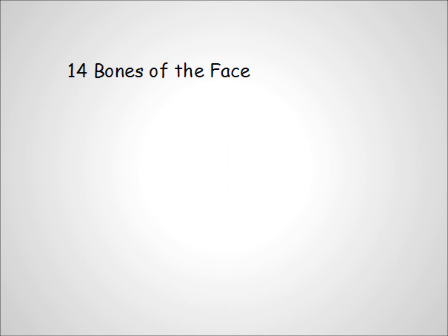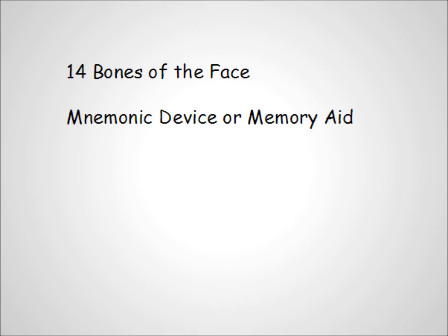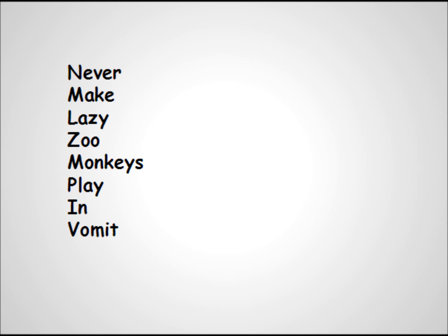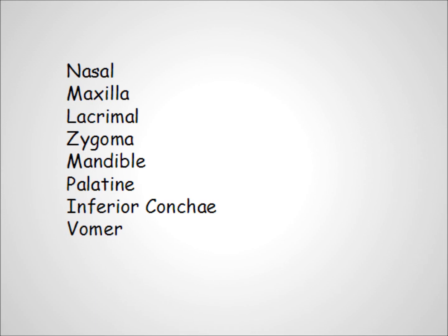Now, on to the face. There are 14 bones of the face, and most of them are in pairs. You may want to use a mnemonic device, or memory aid, to help you with the bones of the face — the sillier, or sometimes racier they are, the easier they are to remember. A previous class came up with the saying: 'Never make lazy zoo monkeys play in vomit.' Those are the first letters of nasal, maxilla, lacrimal, zygoma, mandible, palatine, inferior conchae, and vomer.